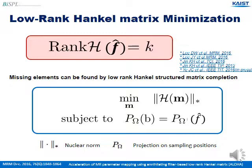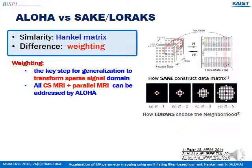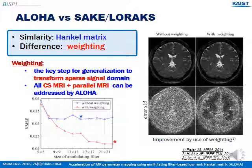Not only for this stream of Diracs case, this can be applied to other typical images such as non-uniform splines or piecewise smooth polynomials. If we apply a proper weighting on K-space, the image becomes sparse and the corresponding Hankel matrix of the weighted K-space data becomes low-ranked. There are several algorithms which utilize the low-rankness of K-space — SAKE and LORAKS are examples. ALOHA has many differences compared to them. ALOHA utilizes the weighting in K-space, which is originated from a sparsifying transform. More sparse signal makes a more low-rank Hankel matrix, and ALOHA improves reconstruction performance enormously using this kind of weighting in K-space.